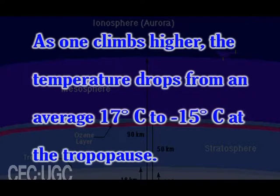As the density of the gases in this layer decreases with height, the air becomes thinner. Therefore, the temperature in the troposphere also decreases with height. As one climbs higher, the temperature drops from an average 17 degrees Celsius to minus 15 degrees Celsius at the tropopause. The boundary separating the troposphere from the stratosphere is called the tropopause.